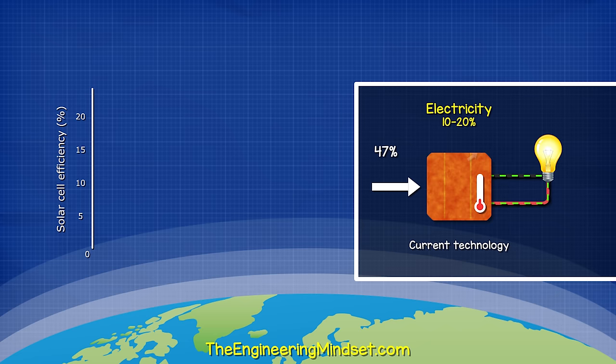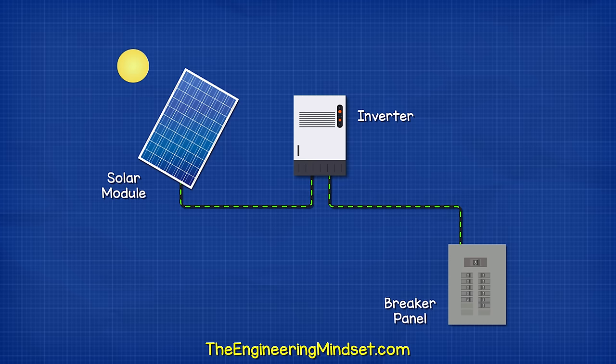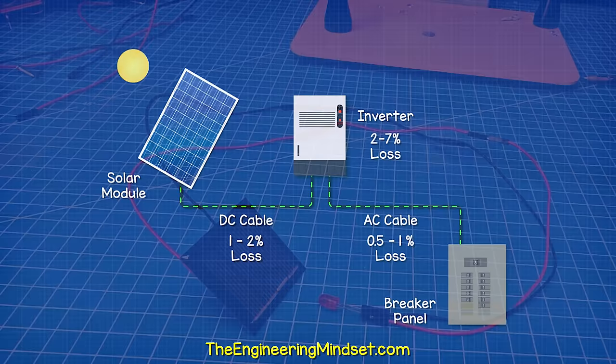Some of this energy will be reflected away. Dust and dirt on the solar panel will also block some energy. And additionally, as solar cells heat up from the wasted energy, their efficiency will decrease. And after we've generated all that energy, we then also have energy losses from the inverter and also the wires.